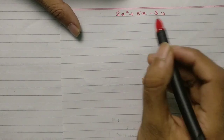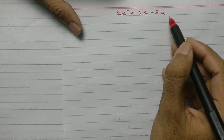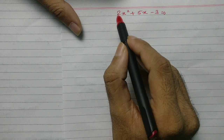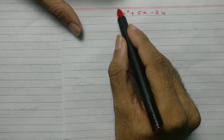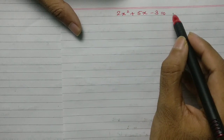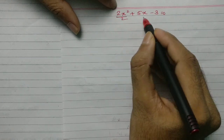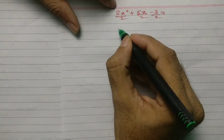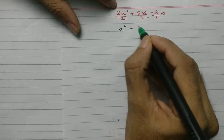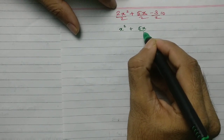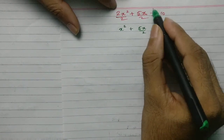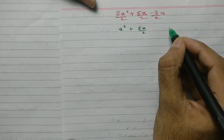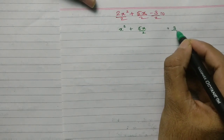Let us take another problem: 2x squared plus 5x minus 3 equals 0. The coefficient of x squared is 2, not 1. So I will divide throughout the equation by 2. This gives x squared plus 5x upon 2, and the constant term minus 3 upon 2 goes to the other side to become positive 3 upon 2.